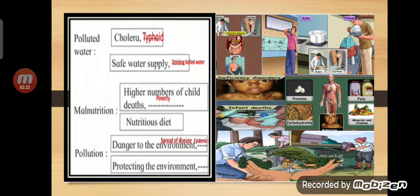Next is malnutrition. A higher number of child deaths occur because small kids don't get proper food due to poverty. So what is the cure? A proper, nutritious diet.